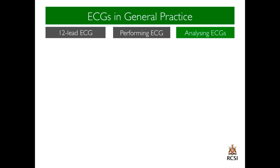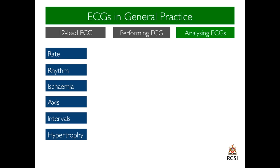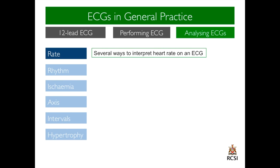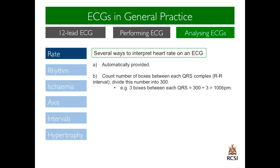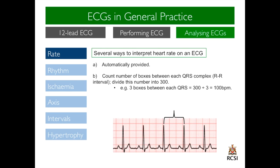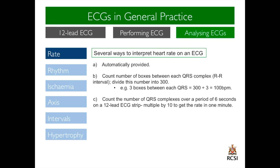We will now move on to analysis or interpretation of an ECG. Whilst it is important to comment on the most obvious feature which you see on an ECG, it is important to have a system. We will go through the ECG according to rate, rhythm, ischemia, axis, intervals and hypertrophy. Firstly, rate. There are several ways to calculate the heart rate on an ECG. The rate might be automatically provided as part of an automatic ECG; however, this should not be assumed — you must know how to calculate the rate. One method is to count the number of boxes between each QRS complex, or the RR interval. If you divide this number into 300, you will get the heart rate. As an example, if there are three boxes between each QRS, dividing 300 by 3 would equal 100 beats per minute.